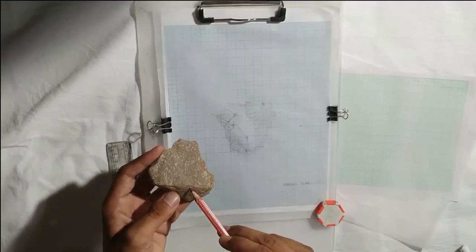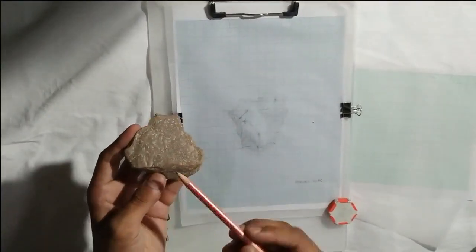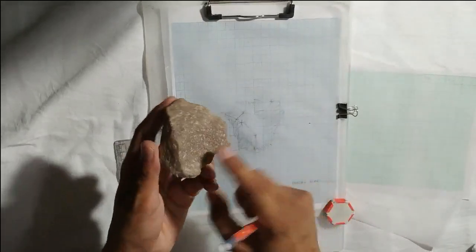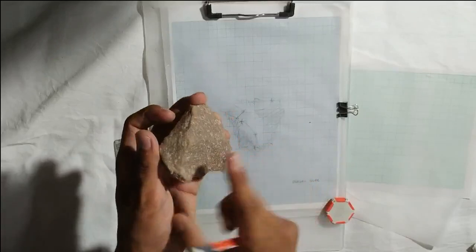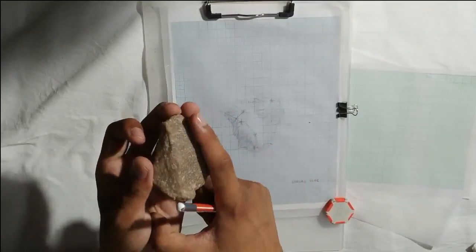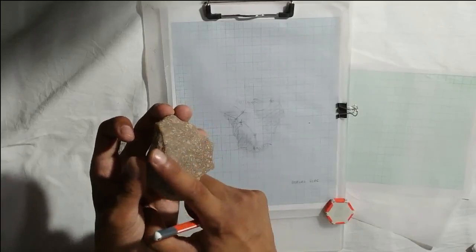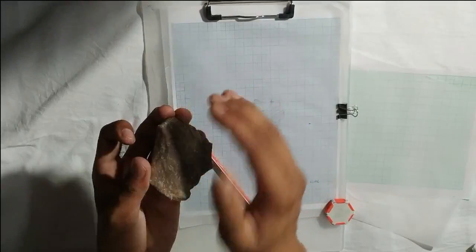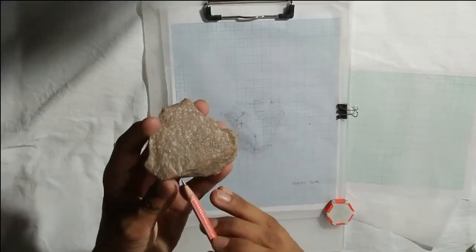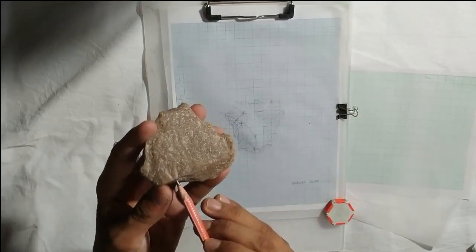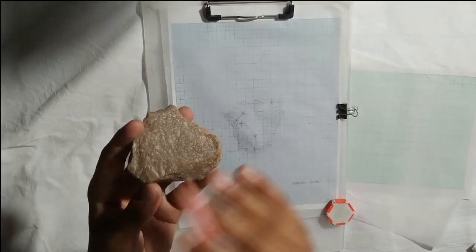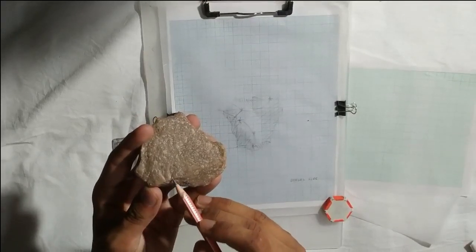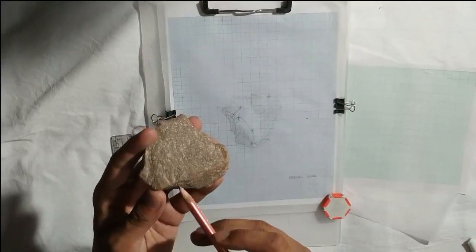Now let us move towards the illustration of our ventral side. As you can see, on this particular side, we have a bulb of percussion. It looks somewhat like a mound and has a convex character. This is also known as a positive flake scar. As you can see here, this was the point where the blow was made and ripple marks can be seen moving out of it. This part is known as the bulb of percussion.